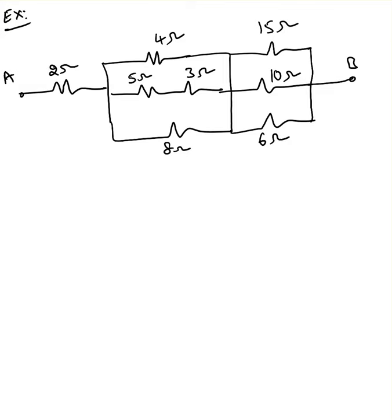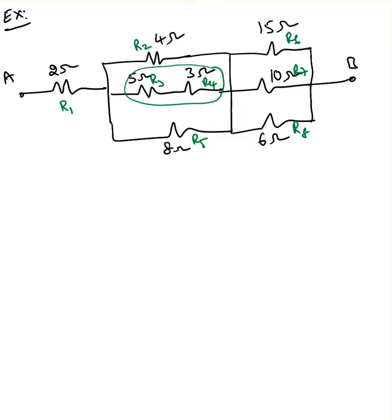In this example, we need to find the resistance value between the A-B terminals. I'm going to label the resistors R1, R2, R3, R4, R5, R6, R7, and R8. By inspection, looking at the circuit, I can clearly see these two resistors are in series.